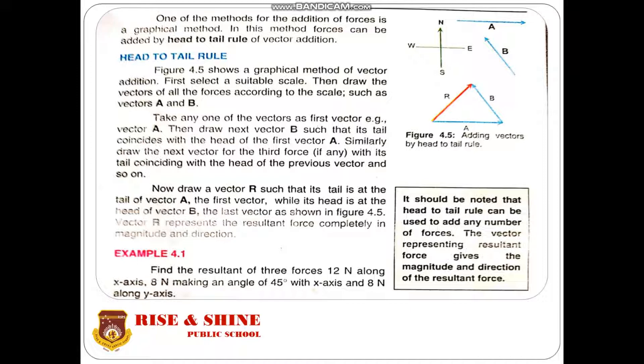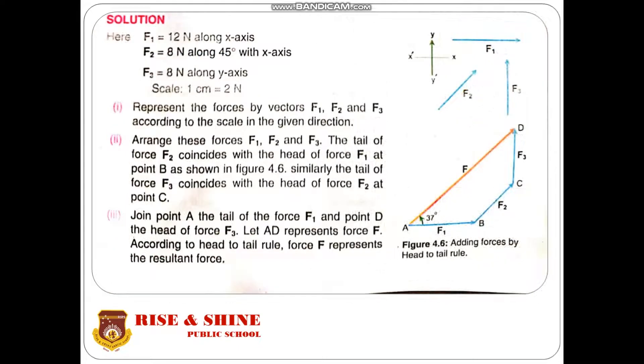It should be noted that the head-to-tail rule can be used to add any number of forces, and the resultant vector gives both magnitude and direction. In example 4.1, we find the resultant of three forces: F1 = 12 N along the x-axis, F2 = 8 N at 45 degrees with the x-axis, and F3 = 8 N along the y-axis, as shown on the next page.